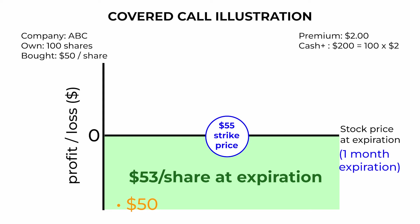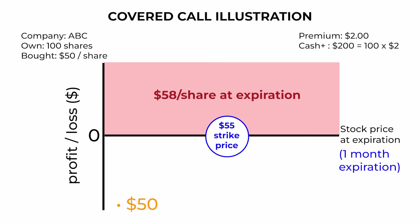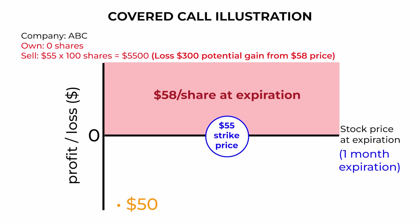For selling this option you receive a premium of $2 per share, totaling $200 for the 100 shares you own. If the stock price stays below $55 until the expiration date, you keep the premium — that's your profit. If the stock price goes above $55, the buyer of the call option may choose to exercise it and you may have to sell your shares at $55 per share regardless of how high the stock price goes.